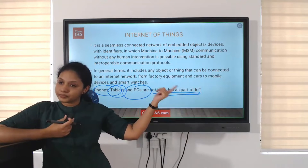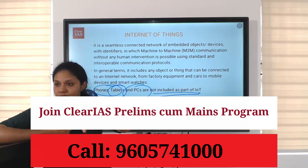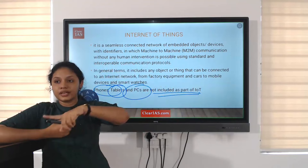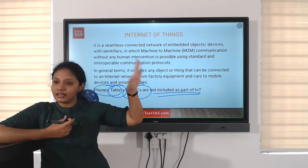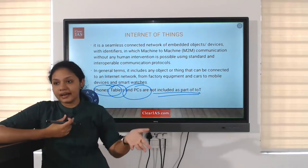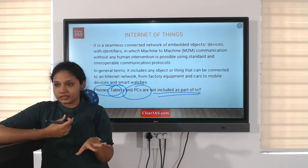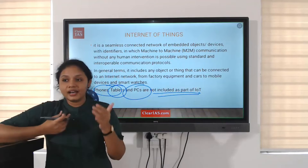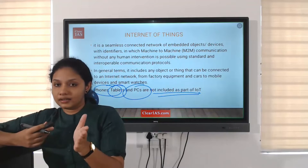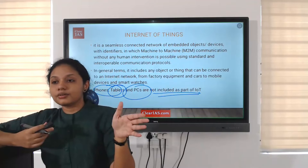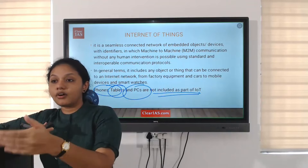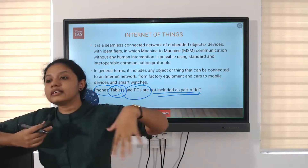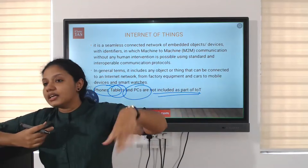Similarly, my AC realizes I need to get up at eight o'clock and shuts down at six to prevent it from getting too cold. My car also gets the information that I need to go out at nine o'clock, so it will start its AC at around 8:55.